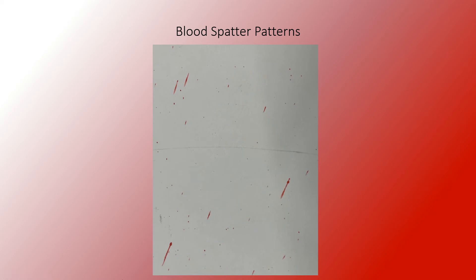What kind of velocity are we looking at here? We're looking at medium velocity. These aren't tiny droplets looking like a mist as you'd have with high velocity. They're not round, which is what we'd look for with low velocity. So we're looking at a medium velocity example here.